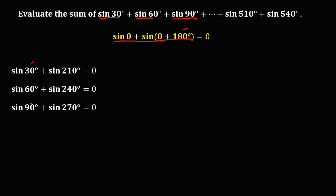Then 90° + 30° = 120°, so sin 120° + sin(120° + 180°) = sin 120° + sin 300°, which is also equal to 0. Then sin 150° + sin 330° is equal to 0.